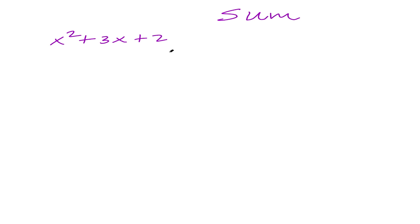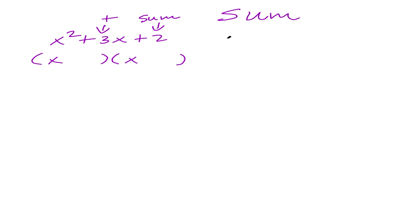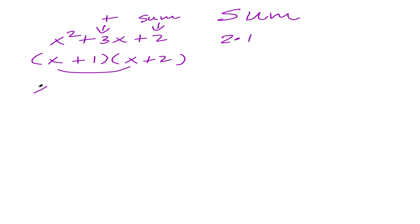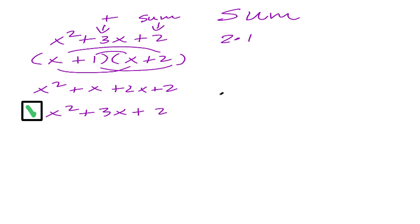Looking at the sum case first: for x² + 3x + 2, I write it as a product of two binomials with x and x as the first terms, since x times x gives x². If the last term is positive, I'm looking for a sum of two factors. The factors of 2 are either (2, 1) or (−2, −1). Since the middle term is positive, both factors must be positive — so the only option is positive 2 and positive 1. Multiplying out confirms we get back to the original solution.